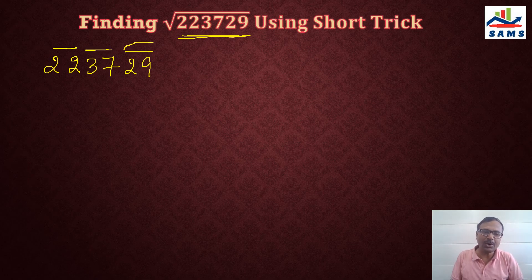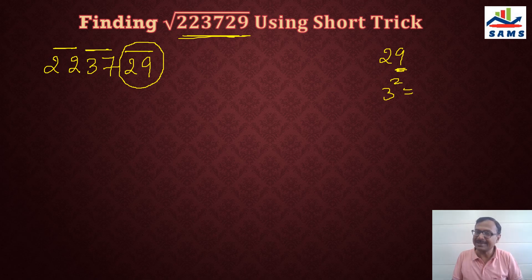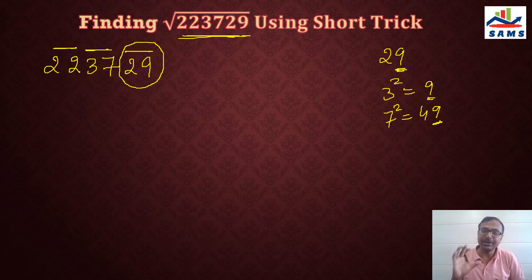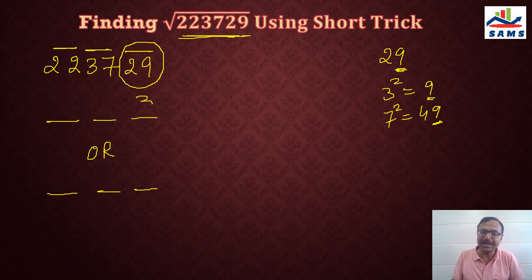Now what is the use of the last pair, that is 29? This gives us the unit digit of our answer. 29 ends in 9, and 3 square is 9, and 7 square is 49 that ends in 9. So there are 2 possibilities of the unit digit. Our answer is a 3-digit number because there are 3 pairs, and the unit digit can either be 3 or 7. That is the use of the last pair of numbers.